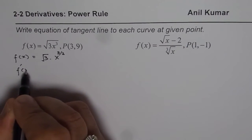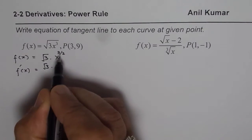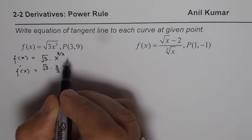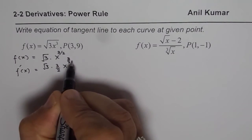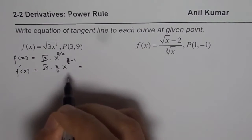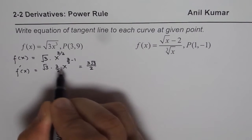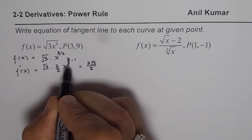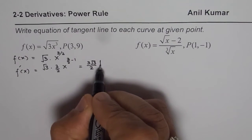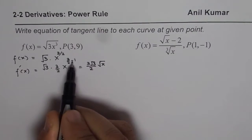So the derivative f'(x) is equal to √3 times (3/2) x to the power of 3/2 minus 1. Let me write 3/2 minus 1 here. We can simplify it a bit — we write 3√3 over 2. And here you can see 3 minus 2 is 1, so we get x to the power of 1/2, which is √x.